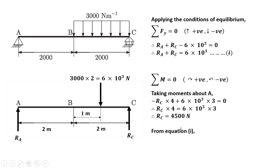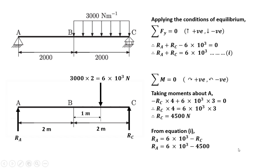Substituting the value of Rc into equation 1 to find Ra: Ra equals 6 × 10³ minus Rc. With Rc equal to 4500, Ra equals 6000 minus 4500, so Ra equals 1500 Newton.